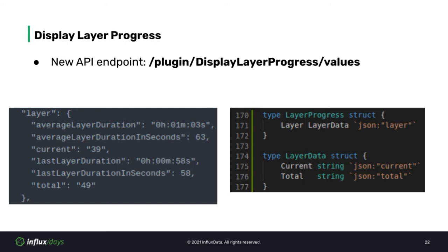The Display Layer Progress plugin exposes a new REST API endpoint that can be called to get the current layer. Calling this endpoint returns a JSON payload with lots of good information. The OctoPrint framework used before doesn't support this plugin, but calling the API endpoint directly is easy to do with Go. I'm showing a snippet of the JSON payload containing the current and total layer number. The external plugin now has a new method that directly calls the endpoint and unmarshals the response to capture the current and total layer.